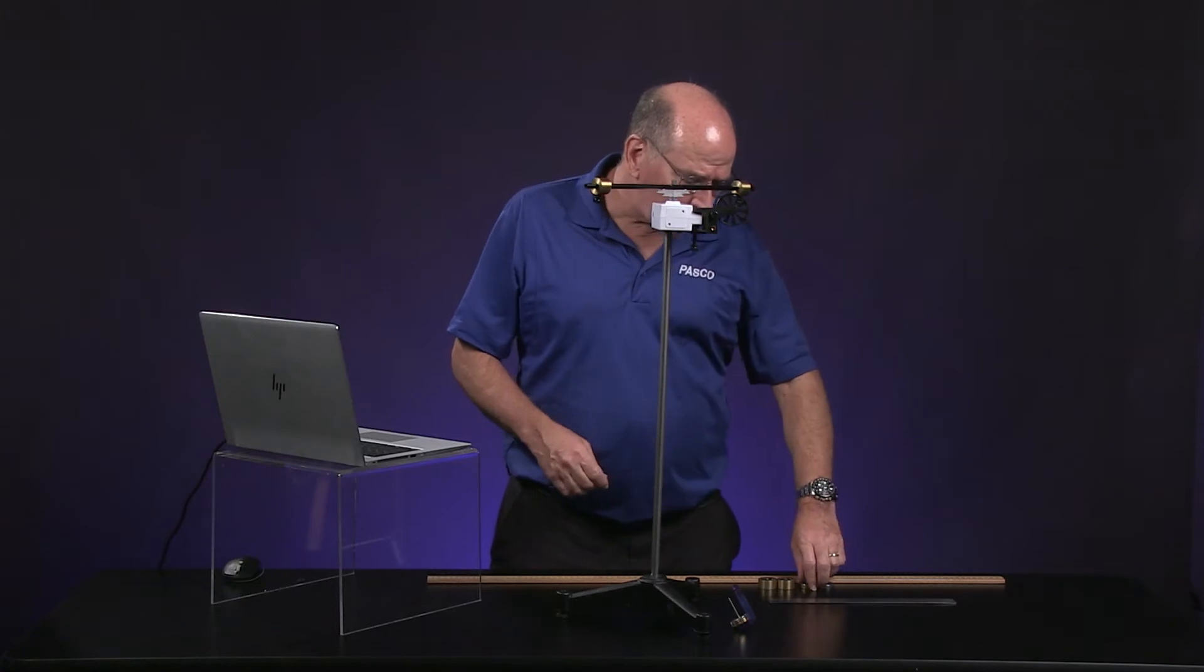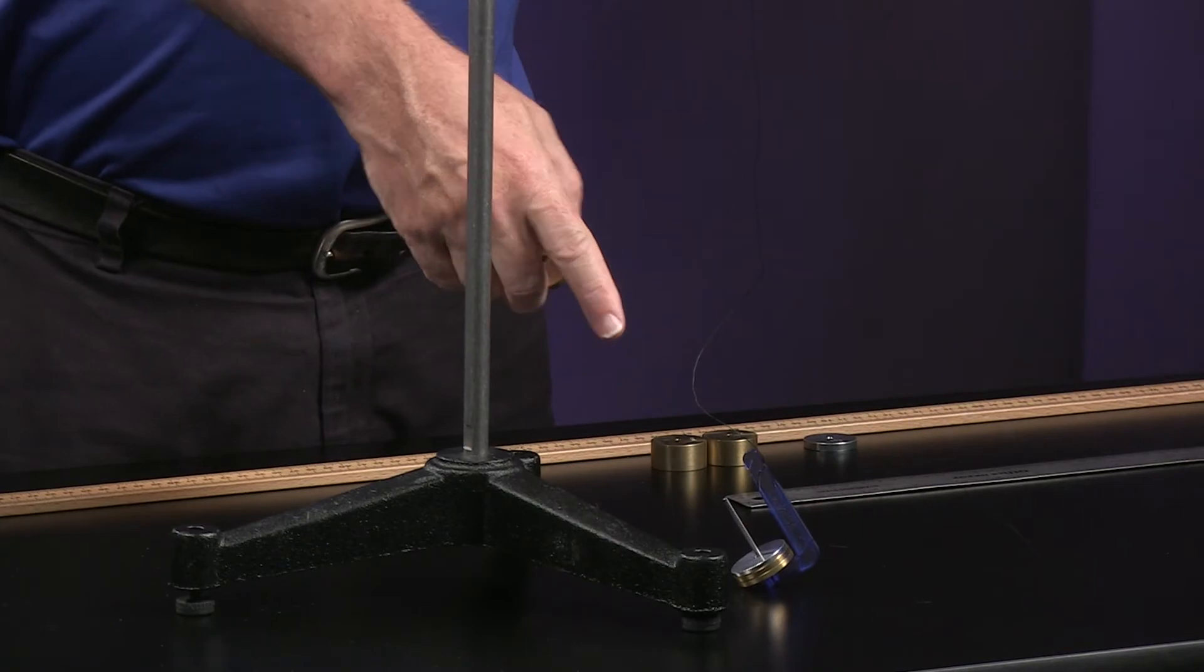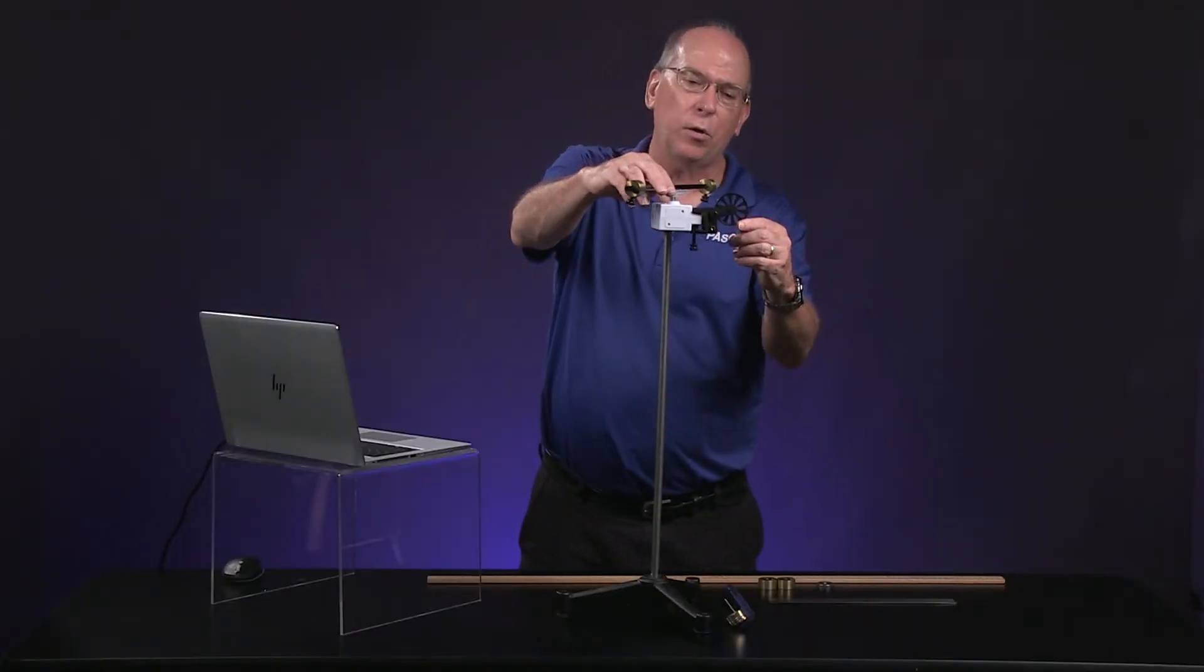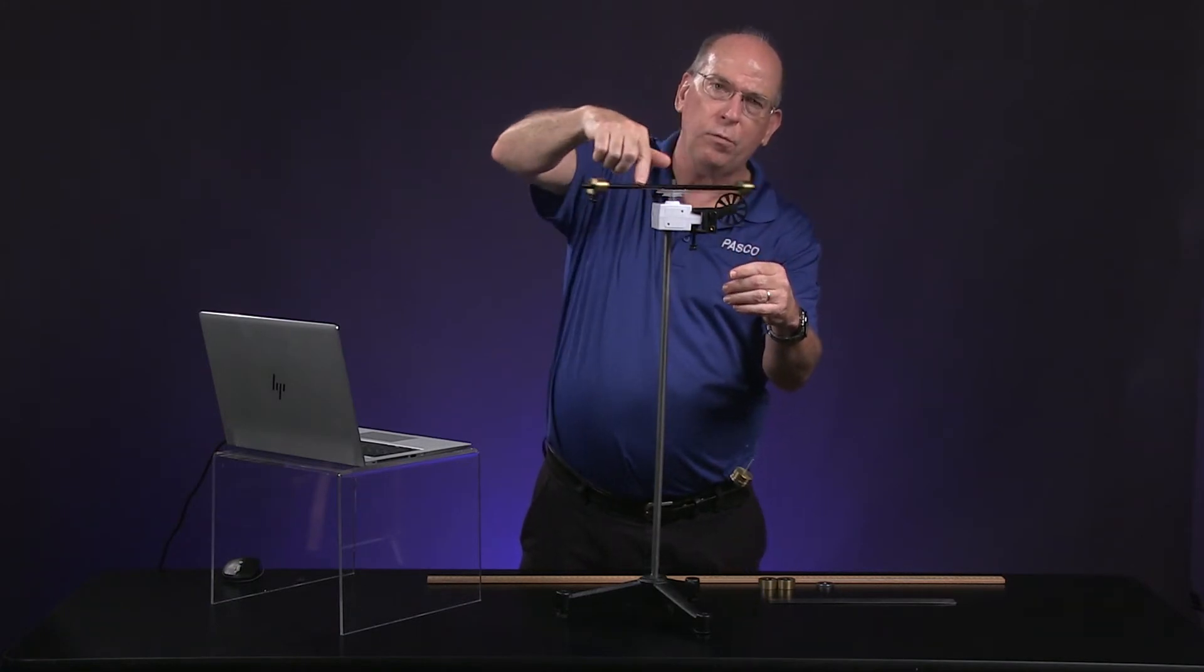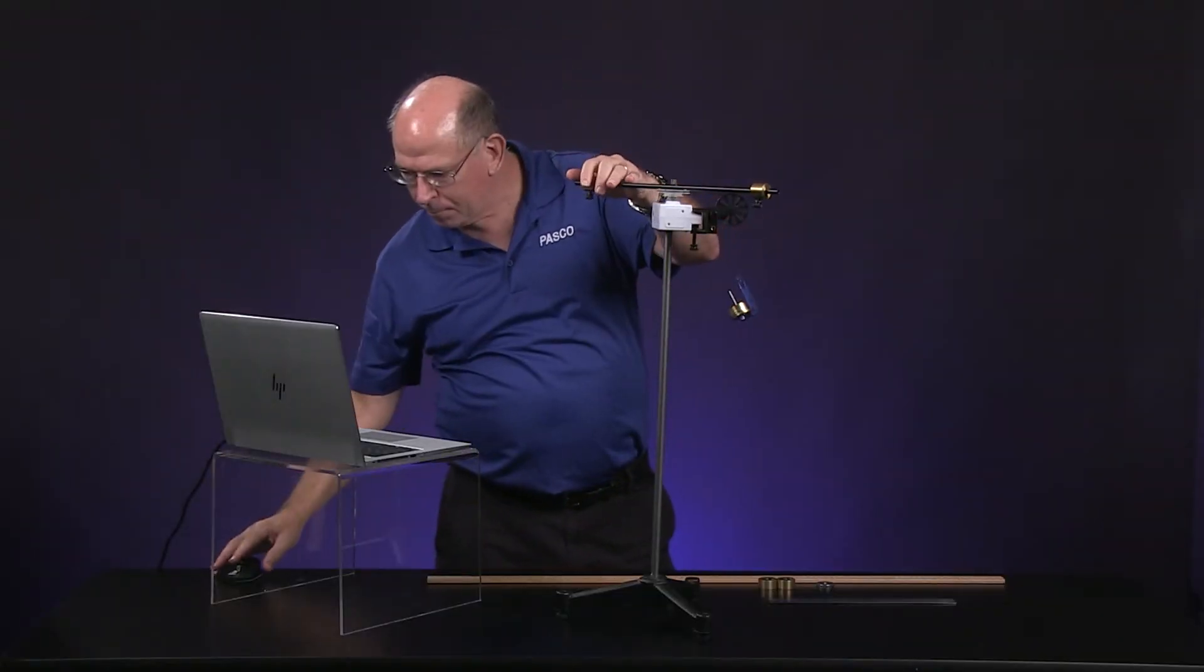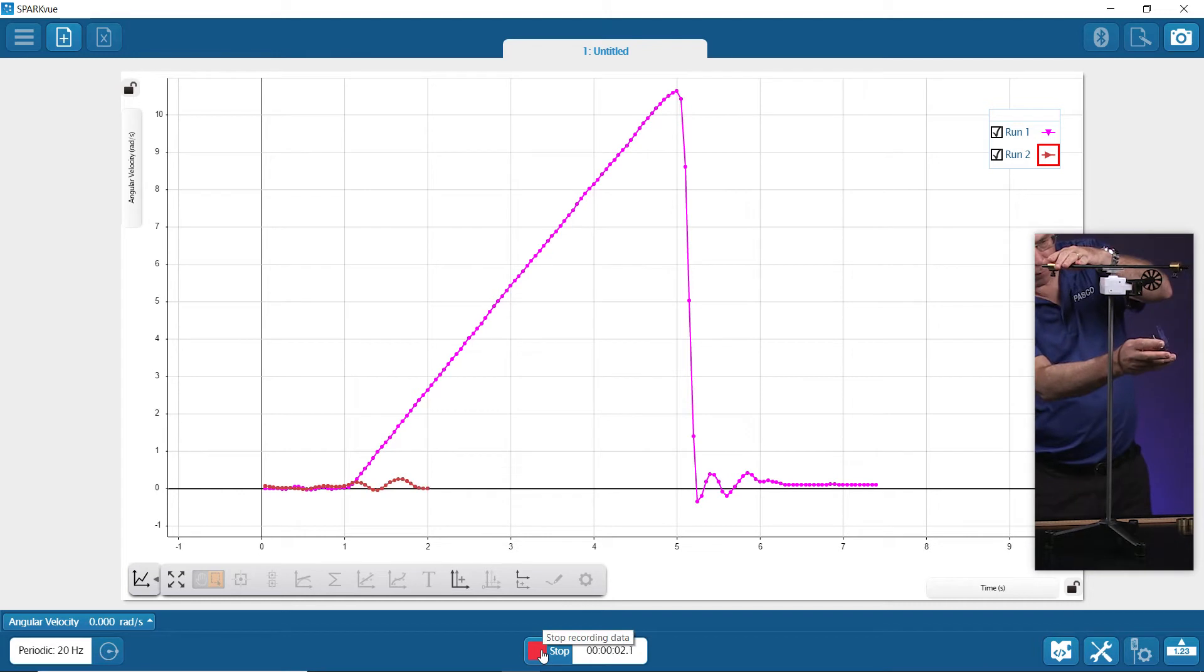For the additional trials, we're going to add another 50 grams. So I have 50 grams here now. Now I've got 100 grams or 0.1 kilograms. So I just wind it back up. So this will be trial two. Hit start. I don't like it. That's swinging.